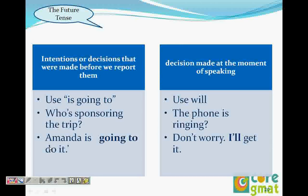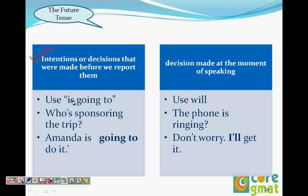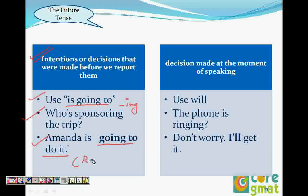When a decision or intention was made before but you are only now reporting it, you use 'going to.' If something has already been arranged and you are simply reporting it, use 'going to.' For example: 'Who is sponsoring the trip? Amanda is going to do it' - because it's already been arranged. Similarly, 'Who is arranging the party? Joe is going to arrange it.' Reporting a previously decided arrangement always takes the 'going to' form.